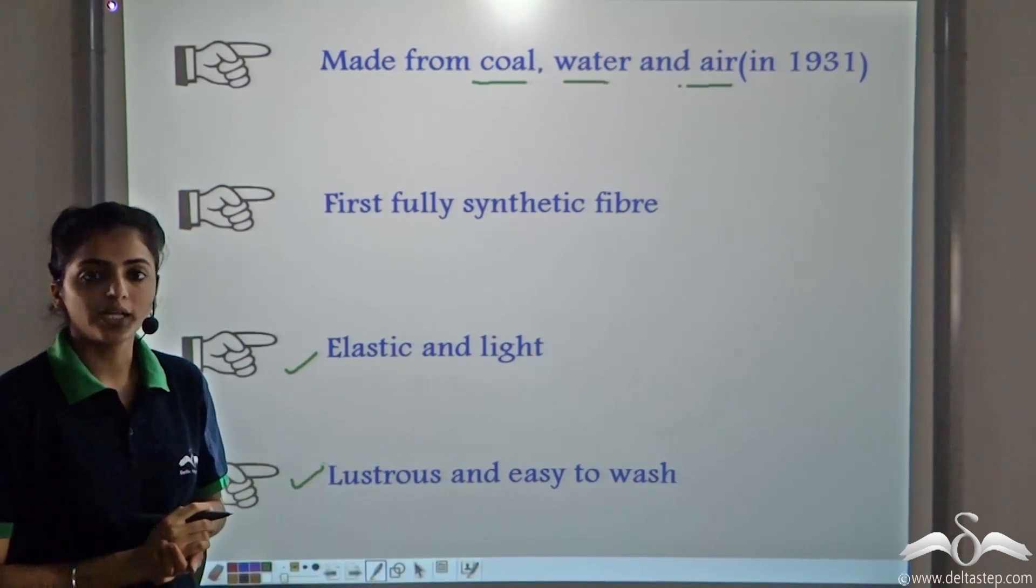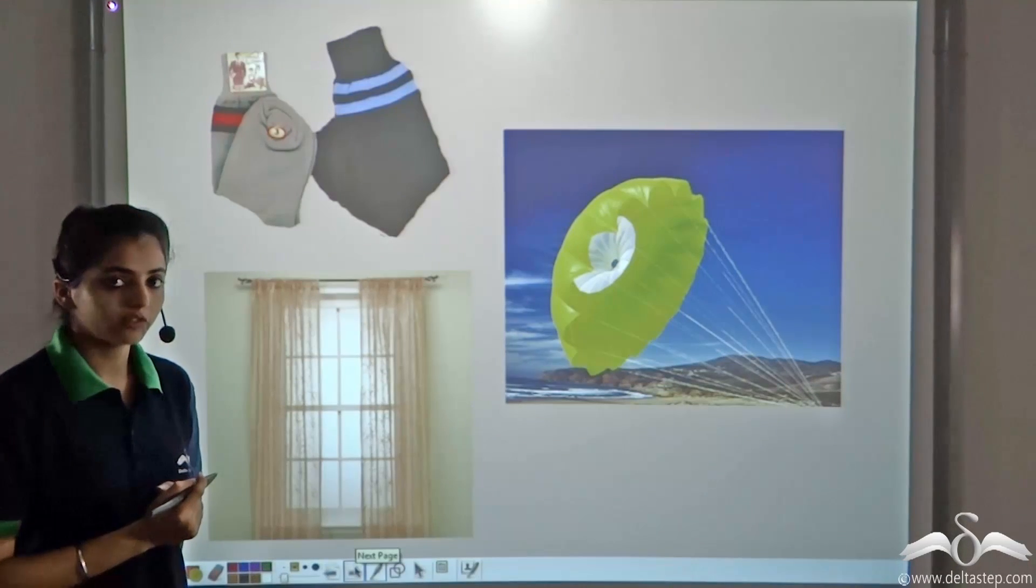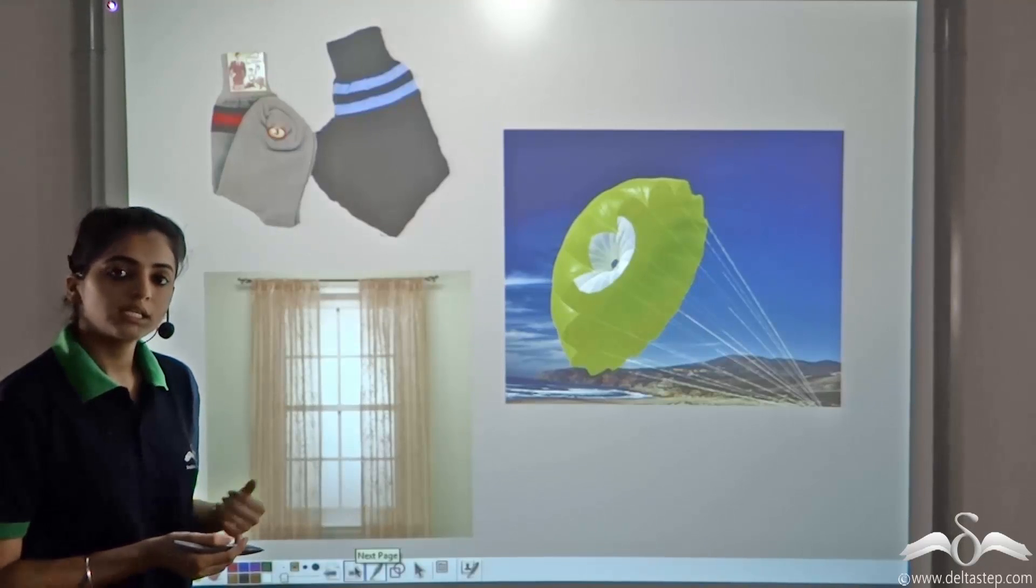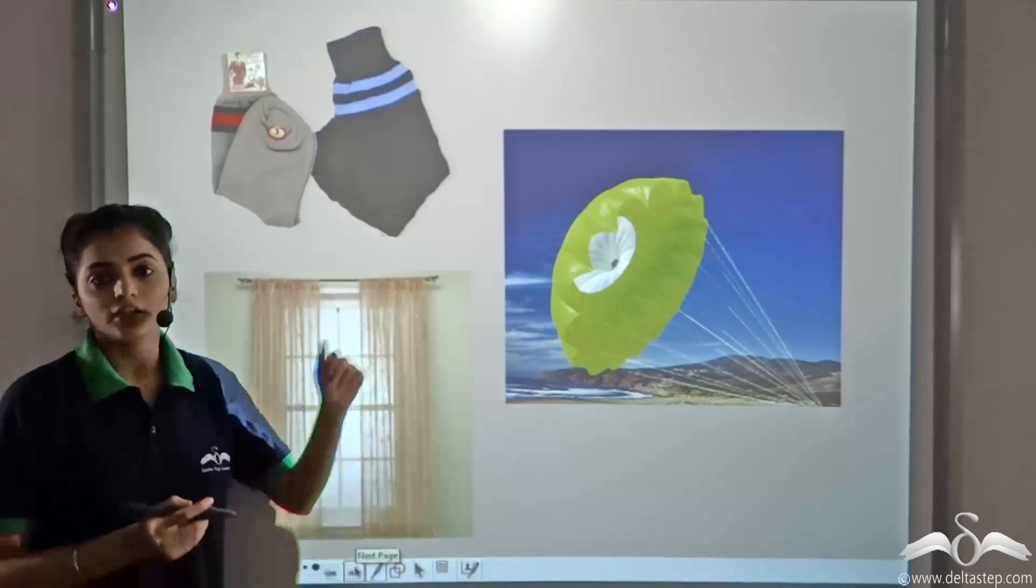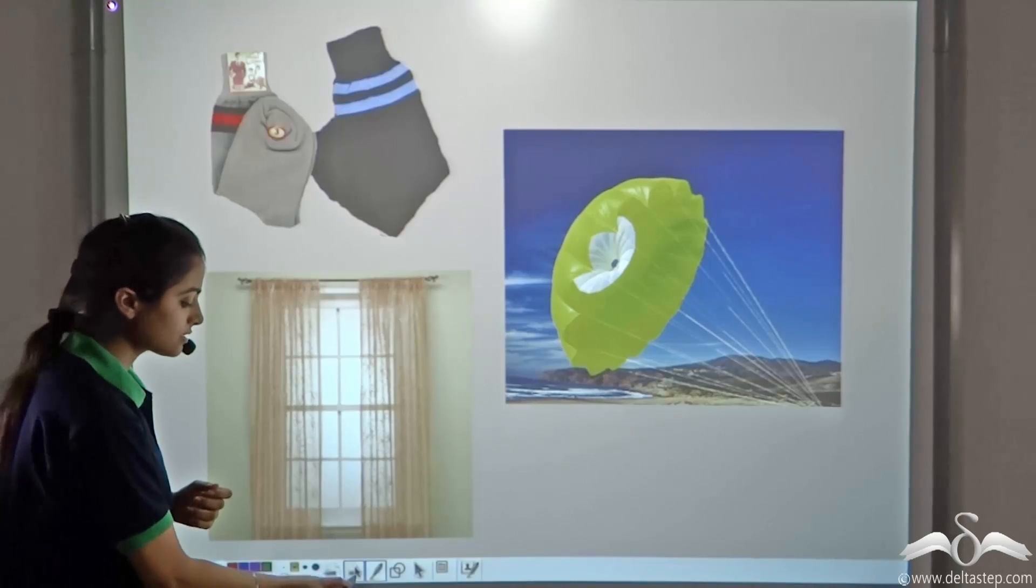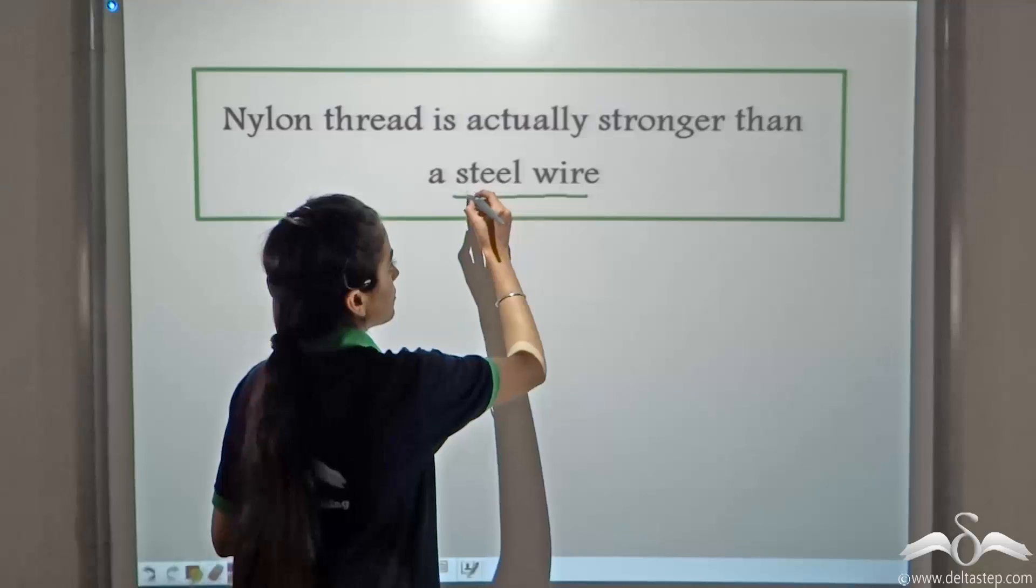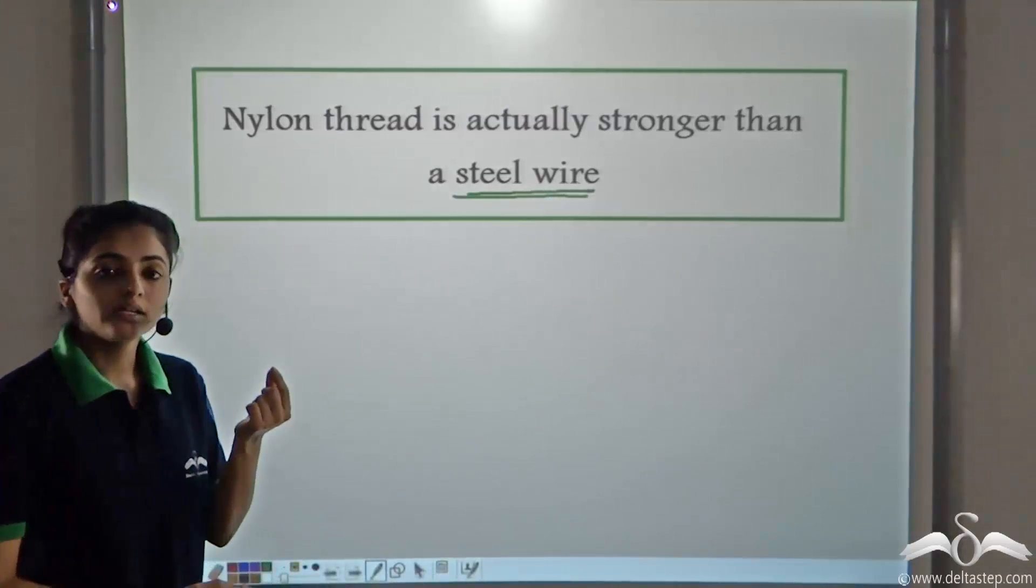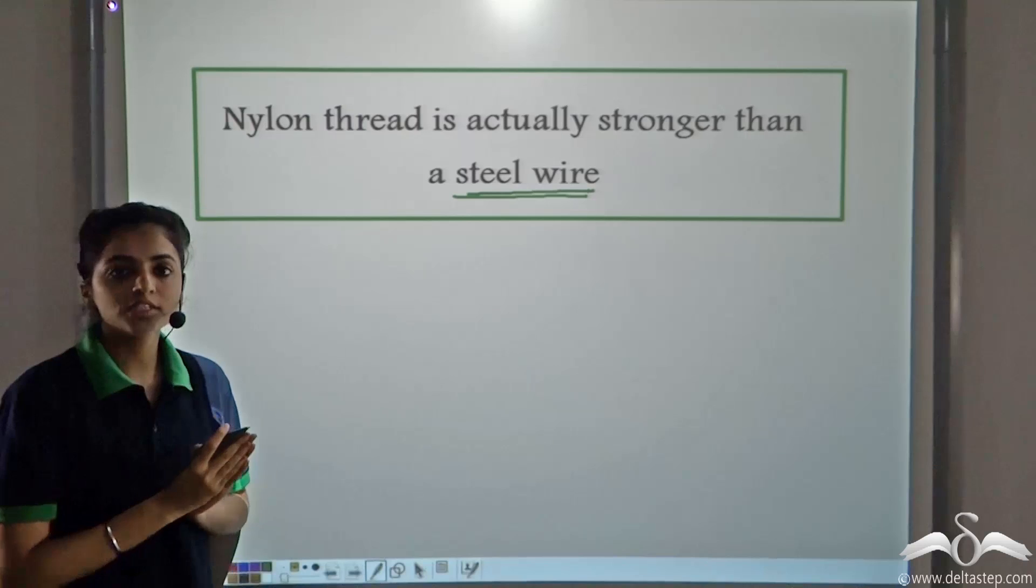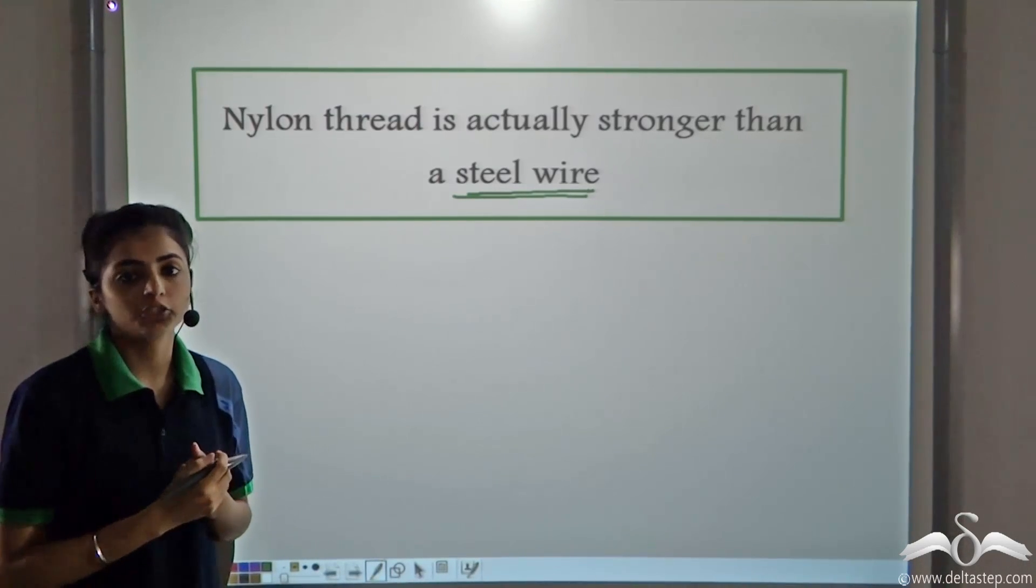These properties of nylon are used in making a number of different articles. For example, it is used in making socks, curtains, and even parachutes. It is known that nylon threads are even stronger than steel wires. A nylon thread is stronger than even a steel wire. And this property of nylon enables it to form parachutes.